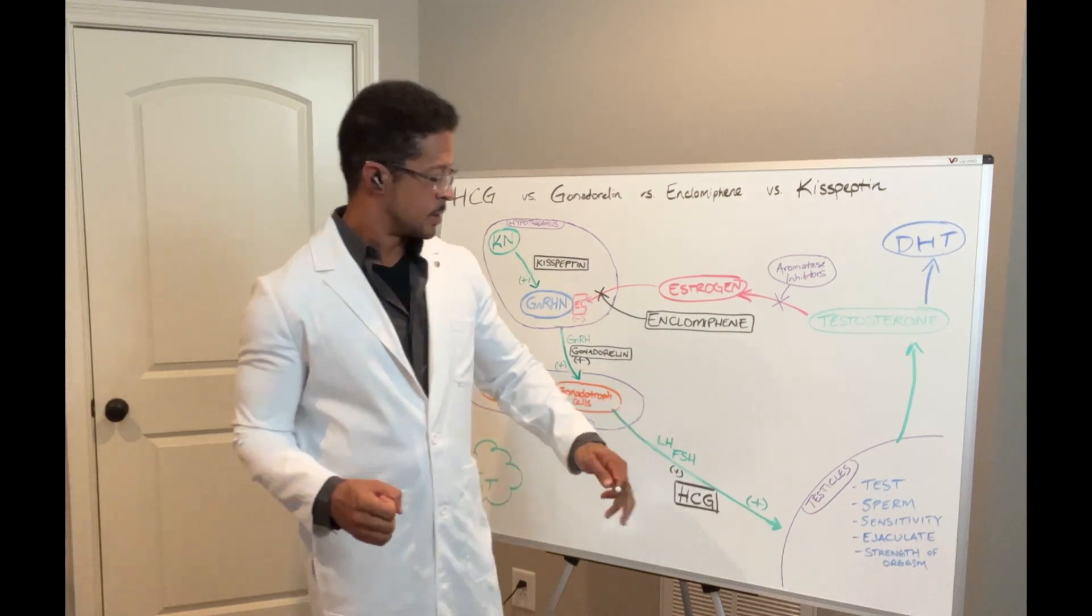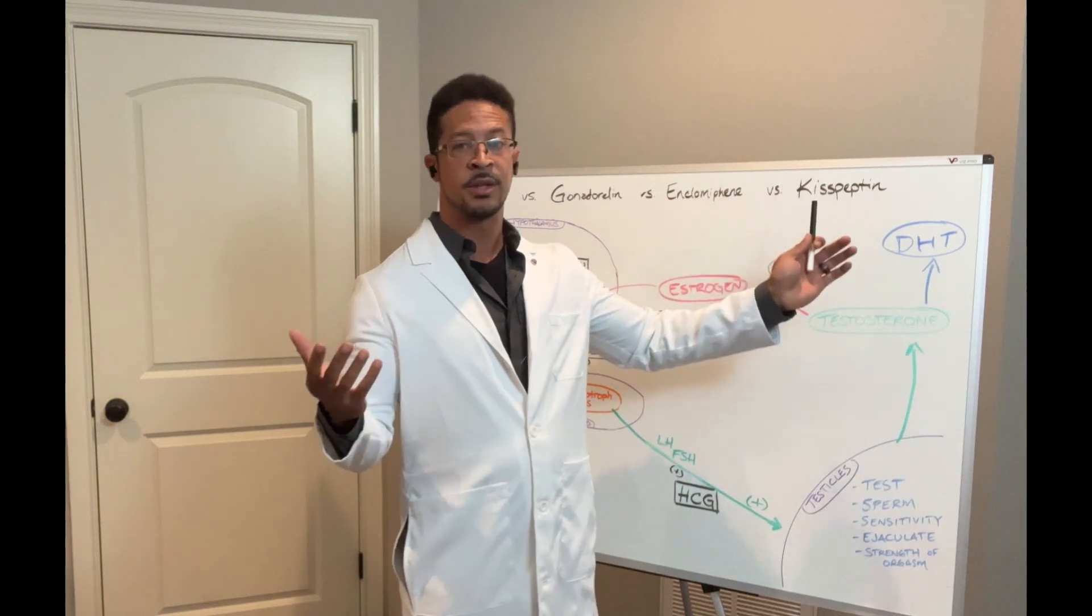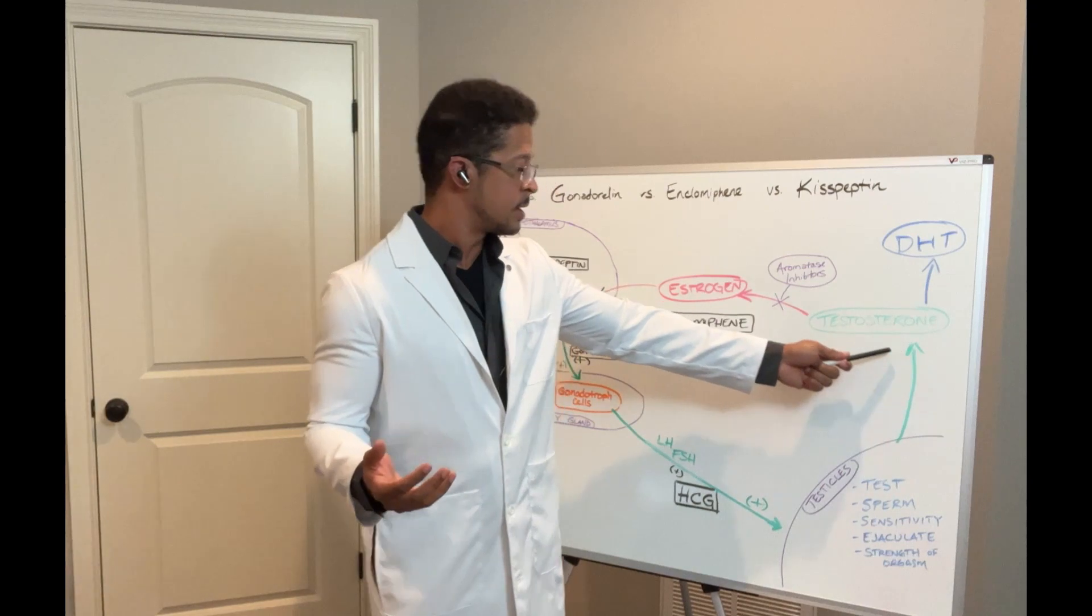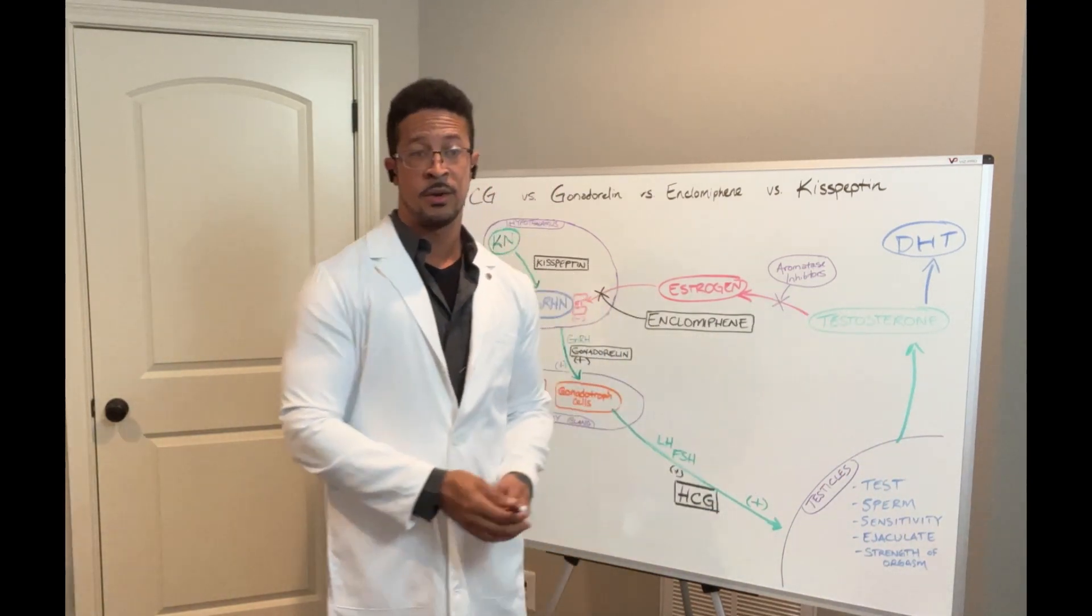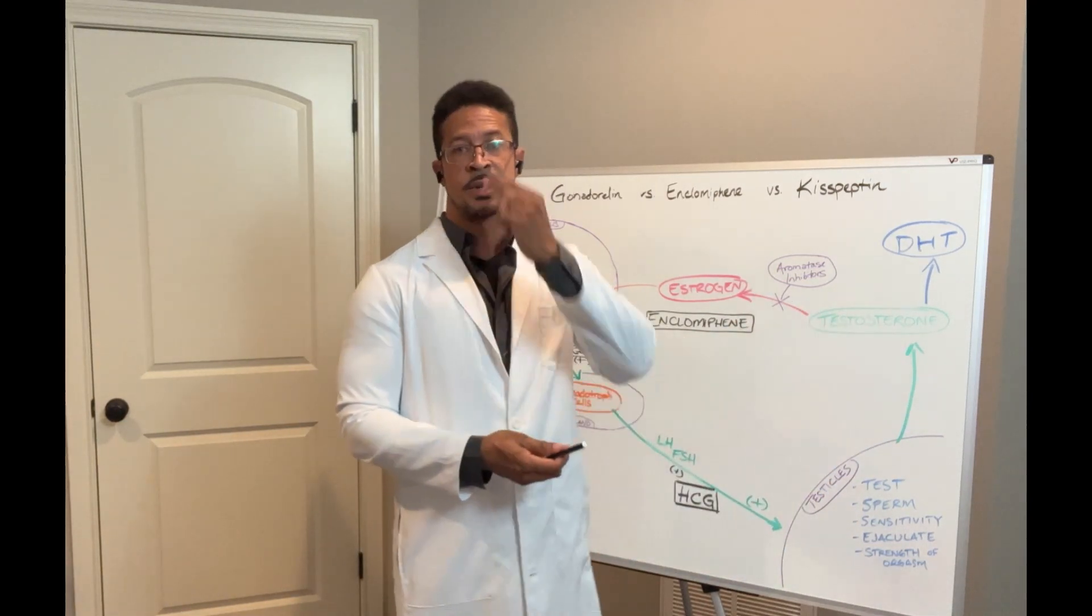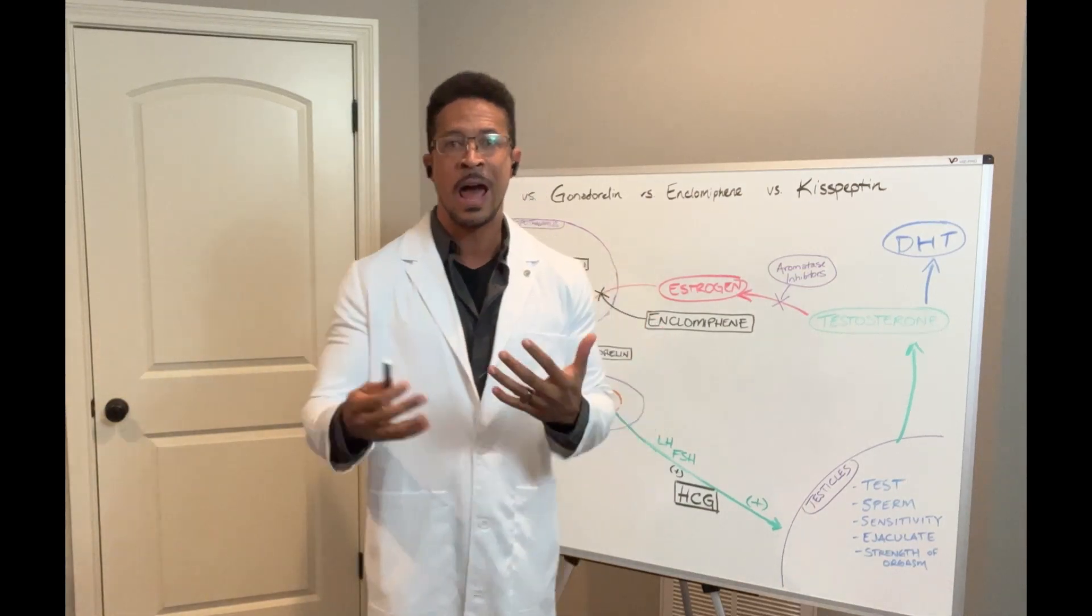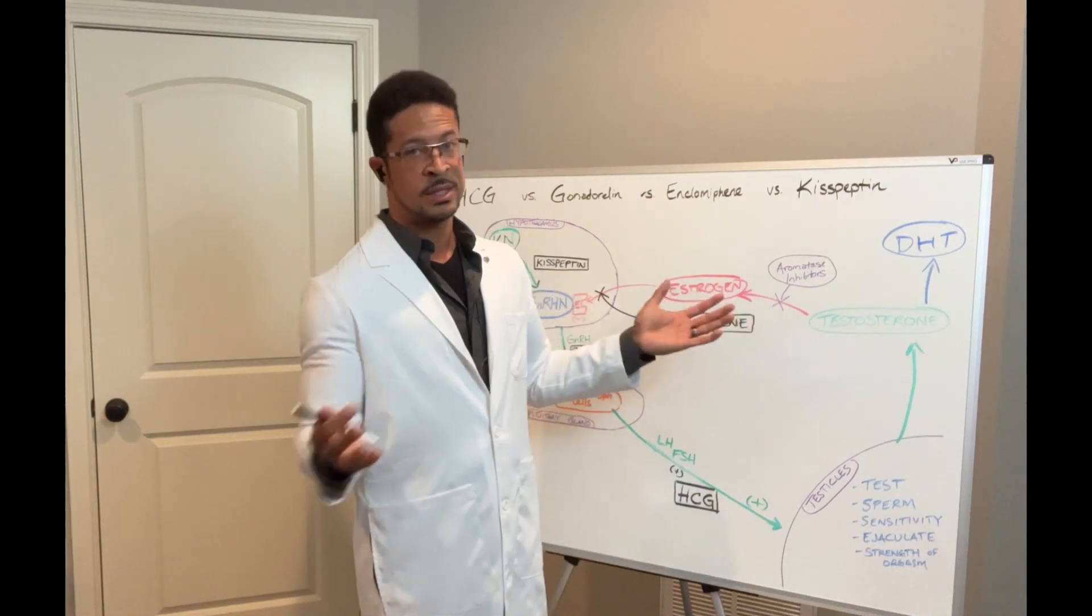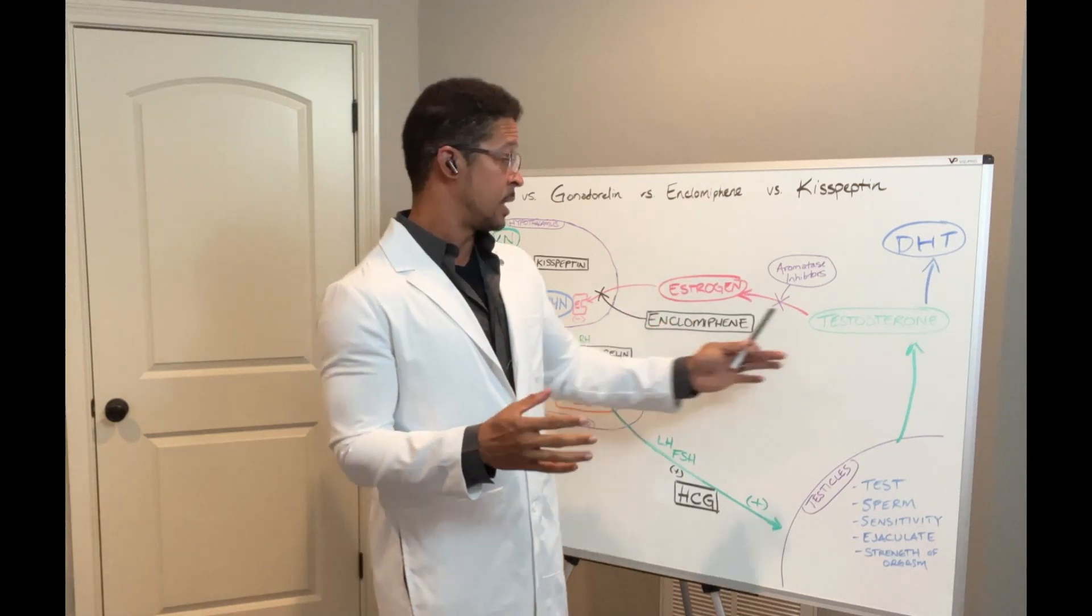Now what happens next? The testicles do produce testosterone. This leaves the testicles and goes into the bloodstream. But it doesn't stop there. This is the zone. Once it's in the bloodstream, this is where, if you happen to be one of those guys that do need to be on TRT, then this is where adding additional testosterone is going to come into play, but we need to understand what mechanically happens next.